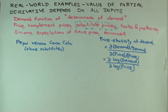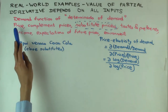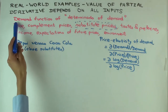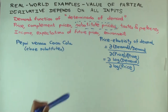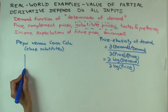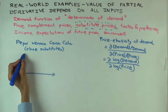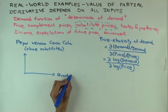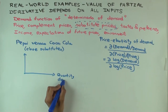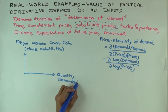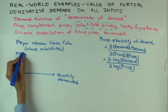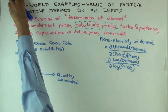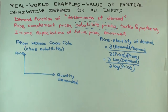Now I want to look at the demand function for Pepsi in terms of the price of Pepsi and the price of Coca-Cola. To keep things simpler, I'm going to fix the price of Coca-Cola and draw the demand curve for Pepsi. The demand curve is essentially the graph of the demand function, except that price is on the vertical axis and quantity demanded is on the horizontal axis.